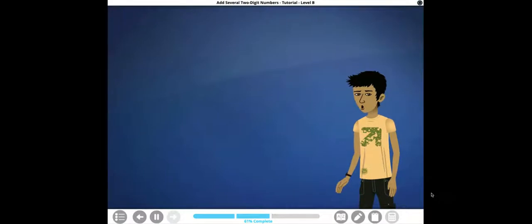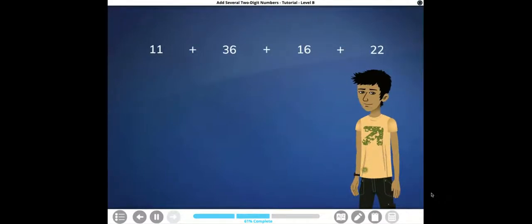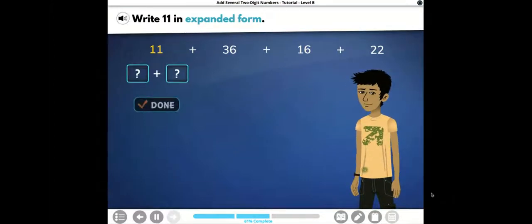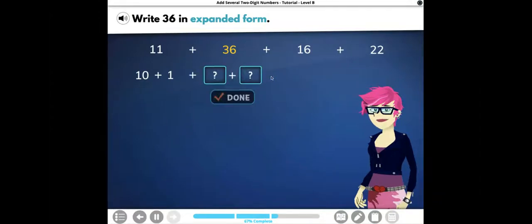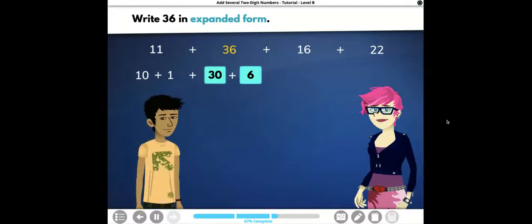Here are some more numbers for us to add. Let's rock this. Write 11 in expanded form. All right, 11. If I break down the tens and ones, I have 10 plus 1. Yep. Write 36 in expanded form. All right, now I'm breaking down 36 into tens and ones. I have 30 plus 6. Awesome. Yep. I'll write the other two numbers in expanded form for you. 16 is equal to 10 plus 6. 22 equals 20 plus 2.